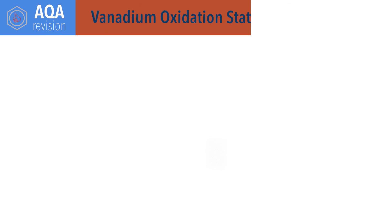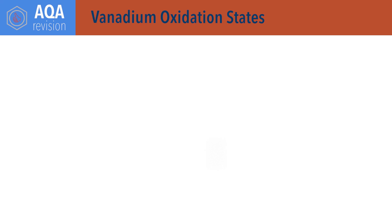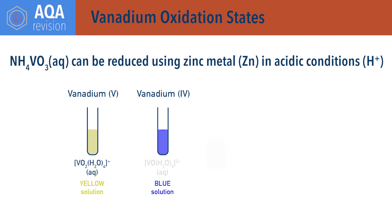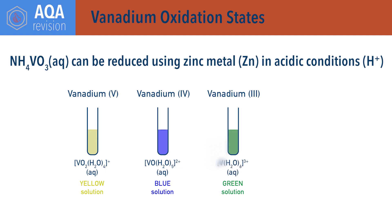Vanadium can form ions with different oxidation states. When a solution of ammonium vanadate, NH₄VO₃, is reduced using zinc metal under acidic conditions, colour changes occur and the final colour depends on the oxidation state of vanadium in the complex ions formed. Vanadium +5 gives a yellow solution with complex ion [VO₂(H₂O)₄]⁺; vanadium +4 gives a blue solution with [VO(H₂O)₅]²⁺; vanadium +3 gives a green solution with [V(H₂O)₆]³⁺; and vanadium +2 gives a purple solution with [V(H₂O)₆]²⁺.